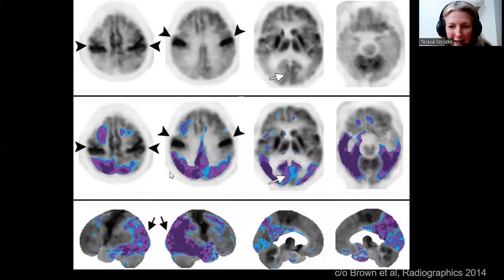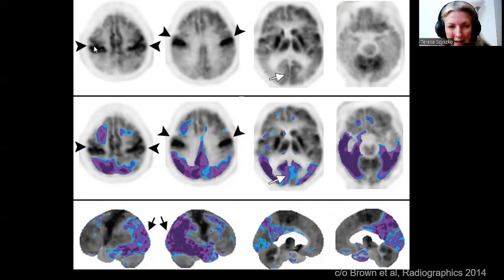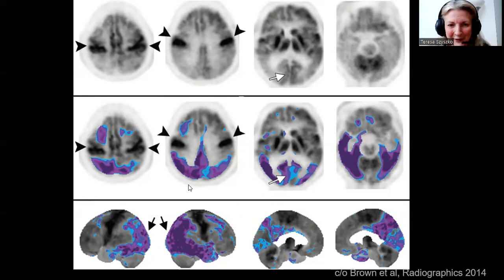Here we have another example from Brenner et al. in Radiographics, one of the best papers for looking at FDG patterns. The sensory motor strip is preserved here. Areas of decreased uptake are fainter: anything purple is less than three standard deviations difference; anything blue is two standard deviations difference. Posteriorly there's decreased uptake which extends into the posterior cingulate, the occipital lobe, and the temporal lobe. So this is parieto-temporal hypometabolism with occipital hypometabolism.